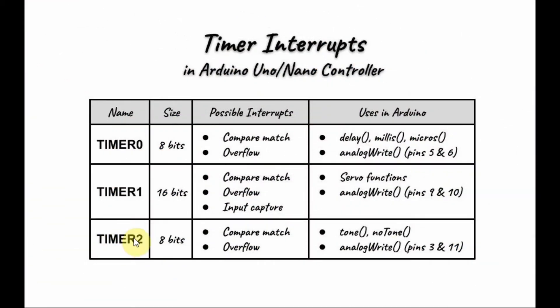Timer 2 is similar to Timer 0, and the functions that use Timer 2 are the tone and noTone functions, and analogWrite for pins 3 and 11.